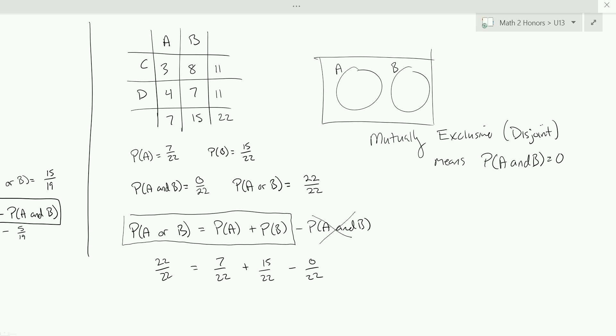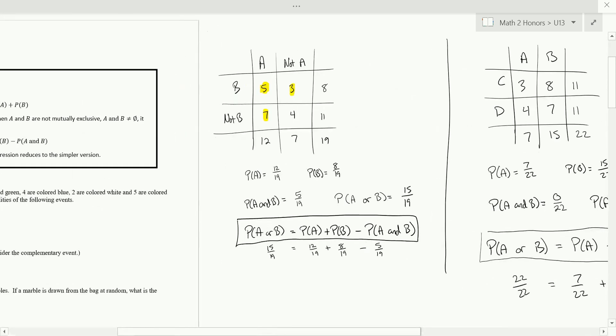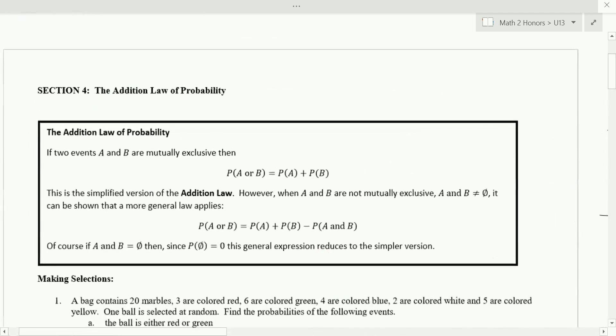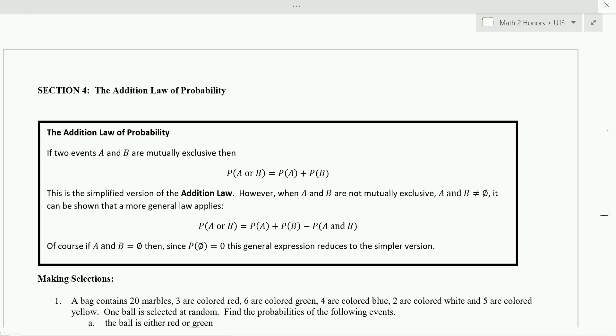So when you're working through a probability problem and you're trying to find the probability of A or B, by default, you're in this. Unless it says otherwise, you're not assuming things are mutually exclusive. Now, if it tells you it's mutually exclusive, then that's going to tell you something about A and B, specifically that it's 0, and you're going to be able to make this part 0. And so this actually simplifies to what we think it should be. The probability of A or B is just the probability of A plus the probability of B. There's no overlap, so you're not counting anything twice. So that is what this is, right? If two events, A and B, are mutually exclusive, then we can just use this simplified form. But this is a special case of this general formula here, right?